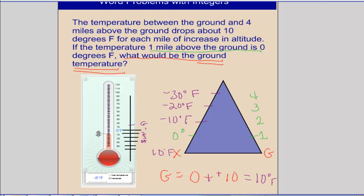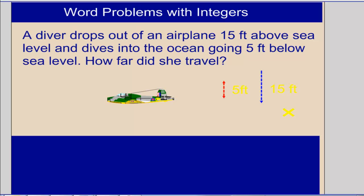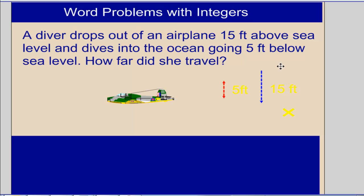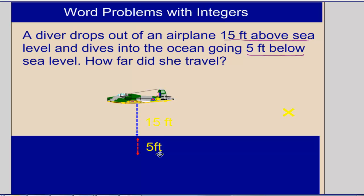Let's look at another example. A diver drops out of an airplane 15 feet above sea level and dives into the ocean going 5 feet below sea level. How far did she travel? The airplane is 15 feet above sea level. The diver then continues going down into the ocean 5 feet below sea level. We want to know how far she traveled altogether — that total distance from the airplane to her final depth.